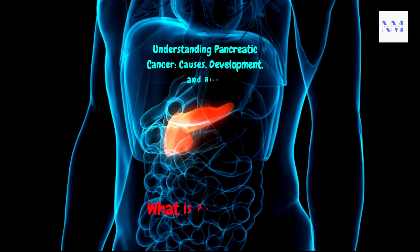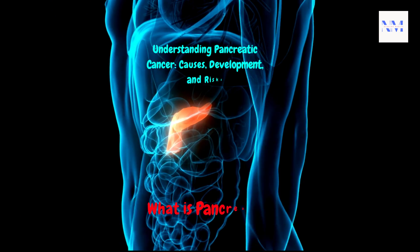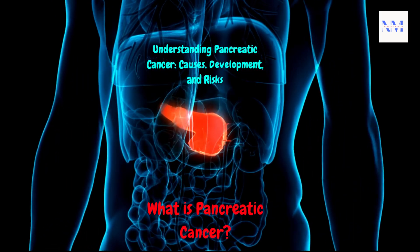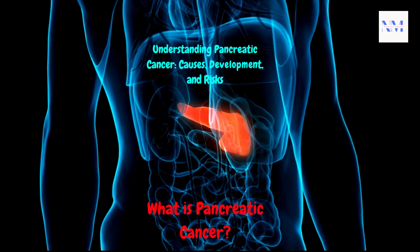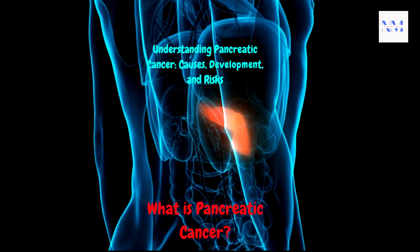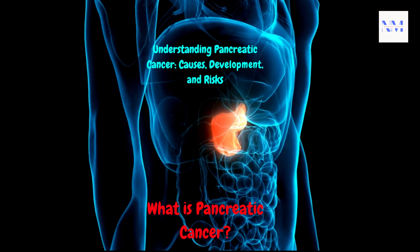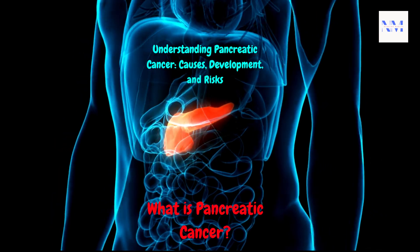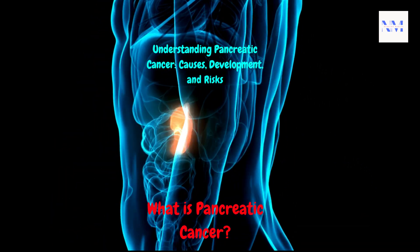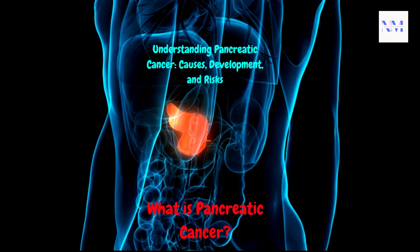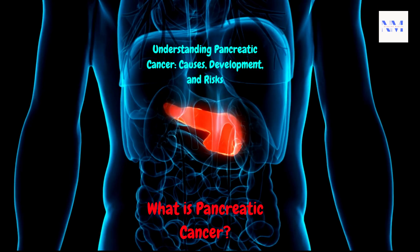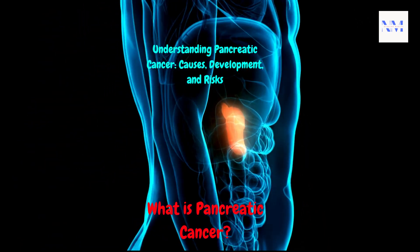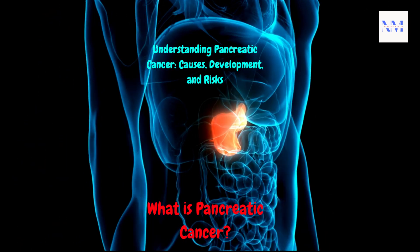What is pancreatic cancer? Before we explore how pancreatic cancer develops, let's start with the basics. The pancreas is a vital organ located behind the stomach that plays a key role in digestion and regulating blood sugar levels. When cells in the pancreas start growing uncontrollably, they form a tumor — and this is what we refer to as pancreatic cancer.